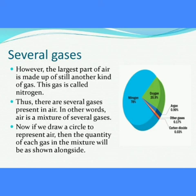However, the largest part of air is made up of still another kind of gas. This gas is called nitrogen. Thus, there are several gases present in air. In other words, air is a mixture of several gases.